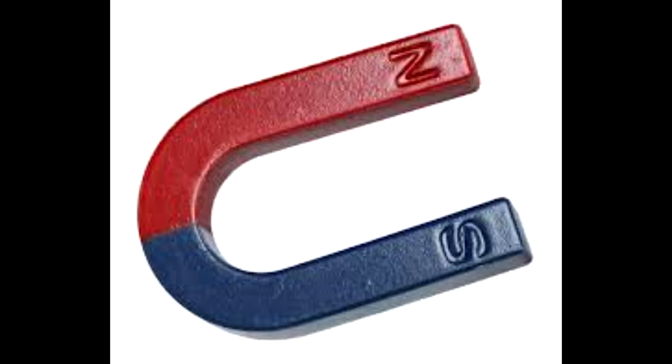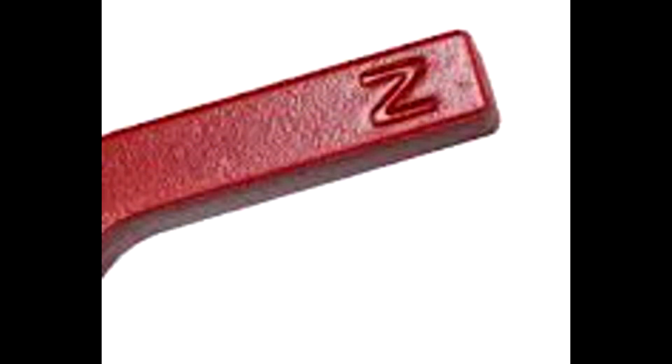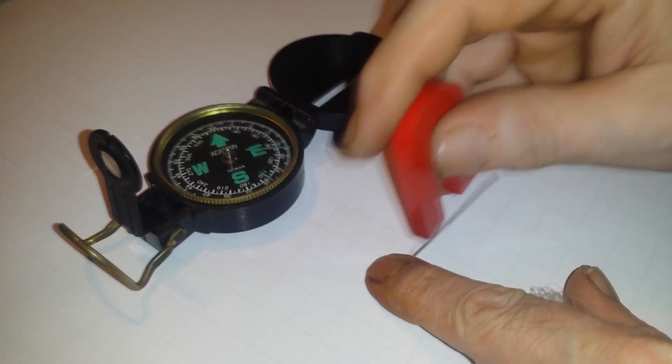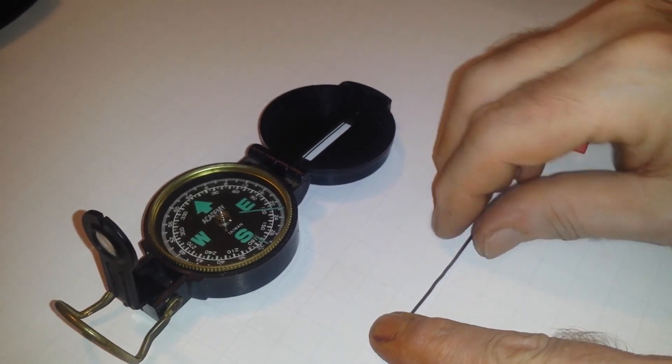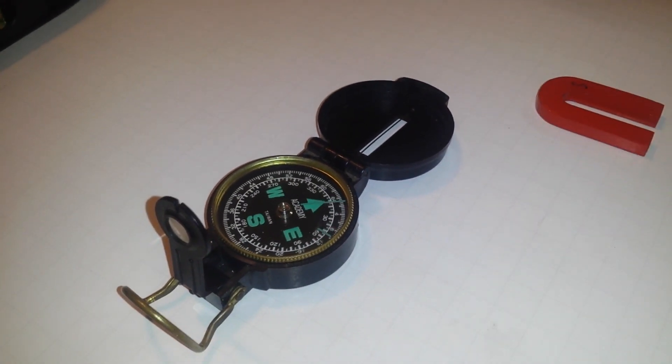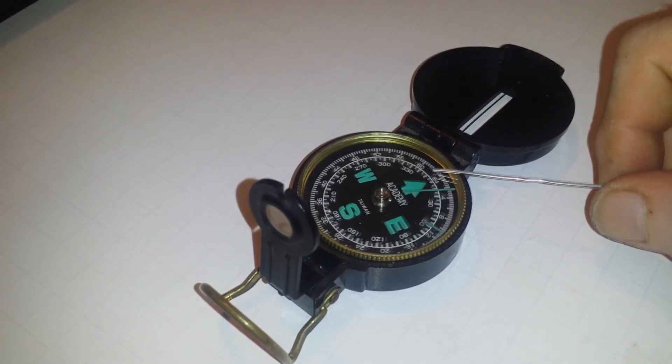When you are making a magnet, use a U-shaped magnet. South Pole Magnet to make North Pole Magnet in the rod, and use U-shaped North Pole Magnet to make South Pole Magnet in the rod. You can drag the magnet from end to end, but never stop in the middle. If you stop in the middle, there will be an extra pole, so it will disturb the magnet's circulation.